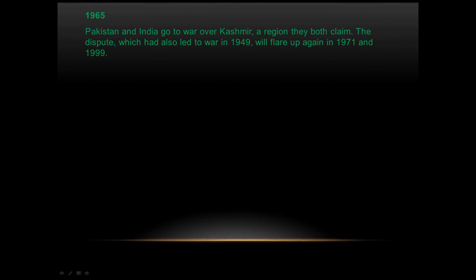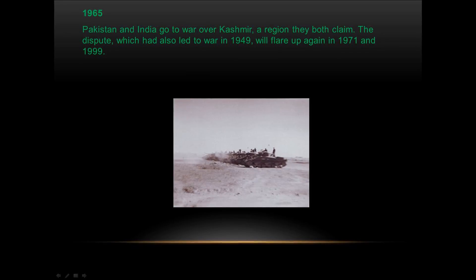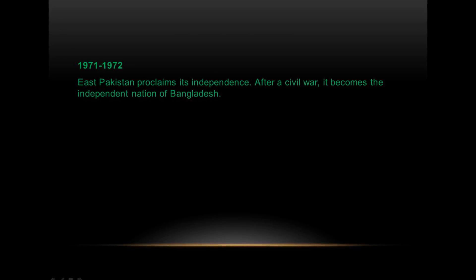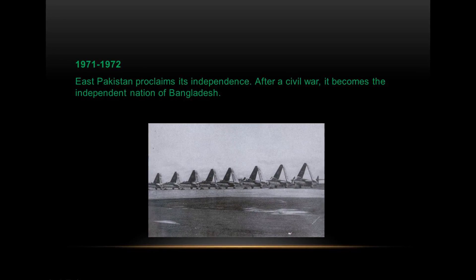In 1965, Pakistan and India went to war over Kashmir, a region they both claim. The dispute, which had also led to war in 1949, flared up again in 1971 and 1999. In 1971 and 1972, East Pakistan proclaimed its independence. After a civil war, it became the independent nation of Bangladesh.